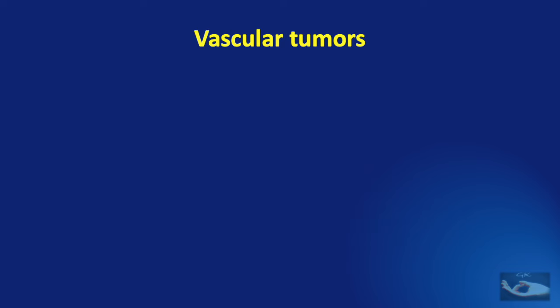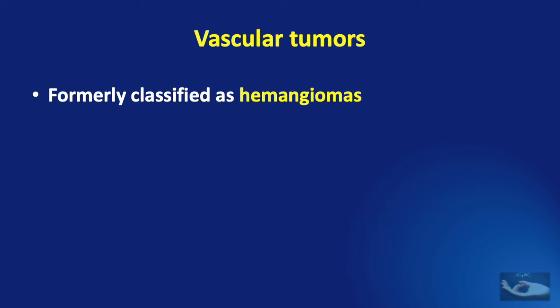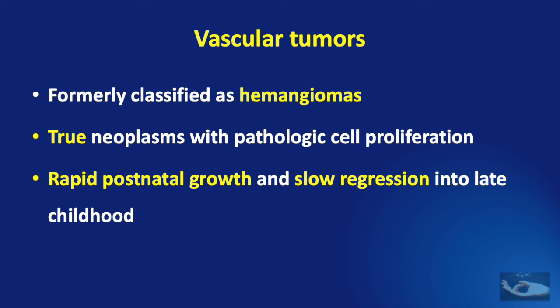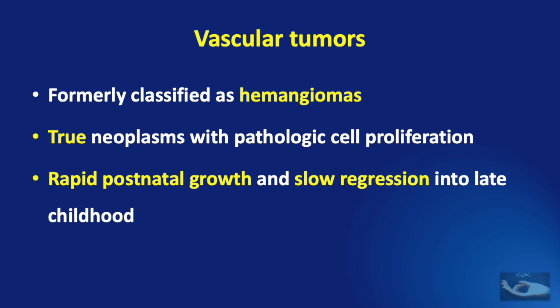Vascular tumors were formerly classified as hemangiomas. They are true neoplasms with pathologic cell proliferation. Rapid postnatal growth and slow regression into late childhood are the hallmarks of vascular tumors. These are examples of vascular tumors of the hands.